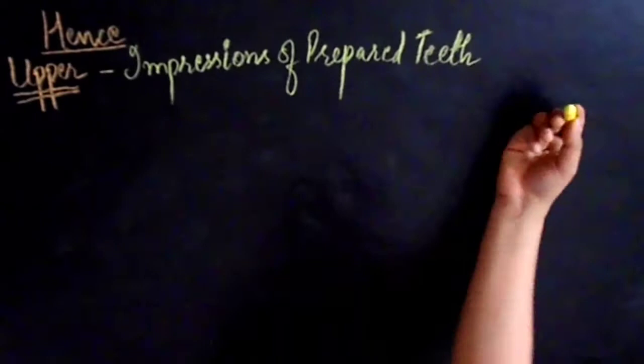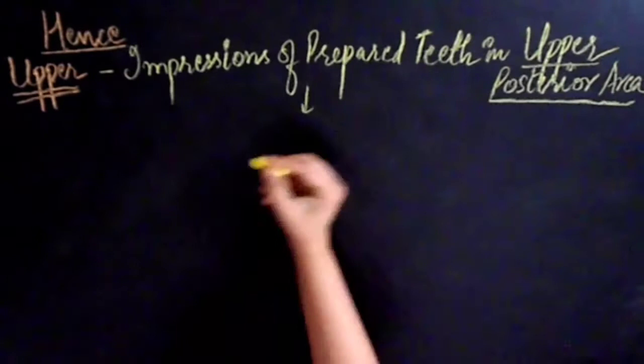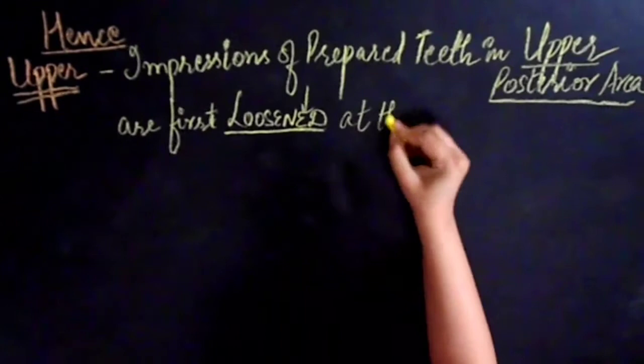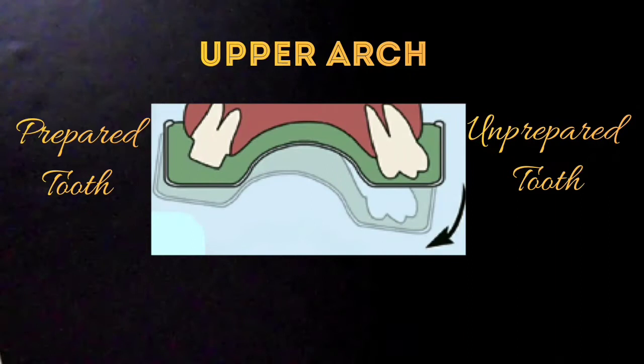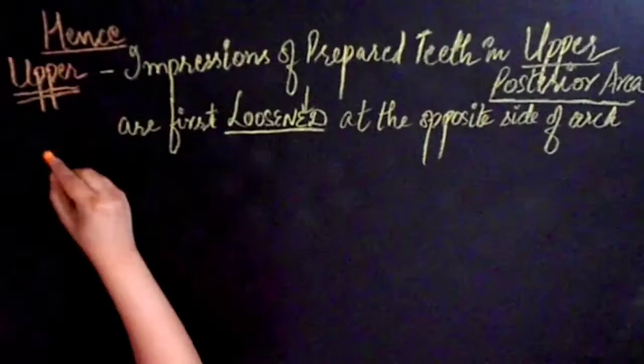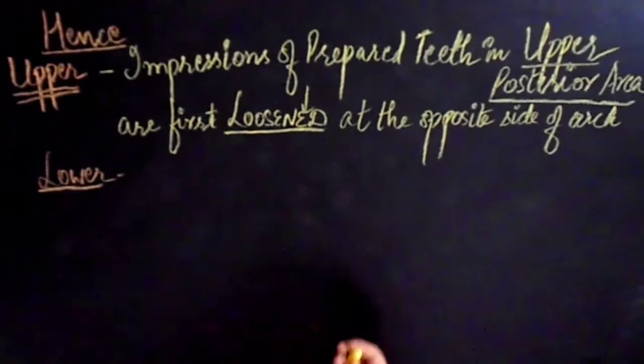Firstly, I'll tell you about the removal of impression from the upper arch. The impressions of prepared teeth in upper posterior area are first loosened at opposite side of the arch. The impression tray should first be loosened at the opposite side of the arch, on the side of the unprepared tooth. That should be first loosened for the upper arch.